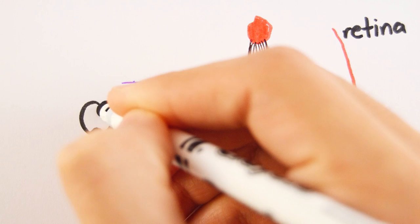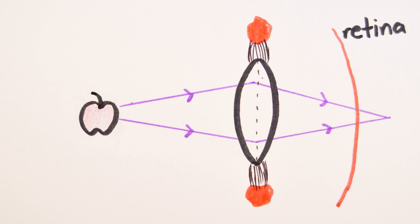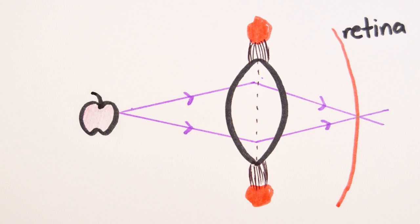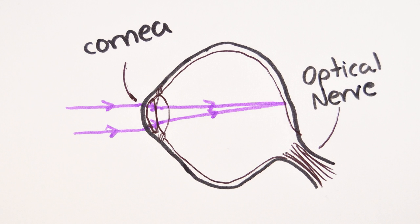When an object is near the ciliary muscles contract to make the lens more curved. This causes the suspensory ligaments to slacken and the light focuses directly onto the retina, which processes the light and triggers electrical impulses to be sent to the brain through the optical nerve.